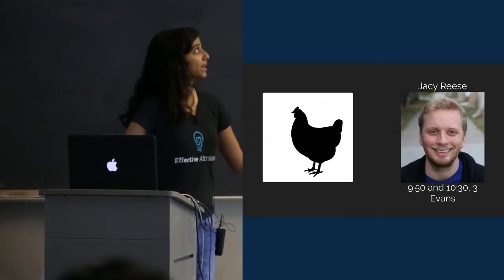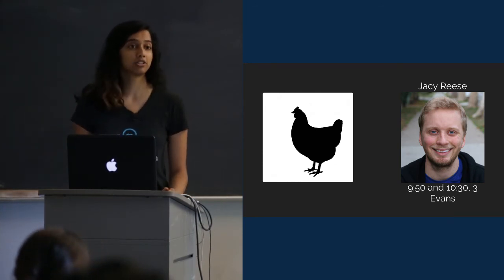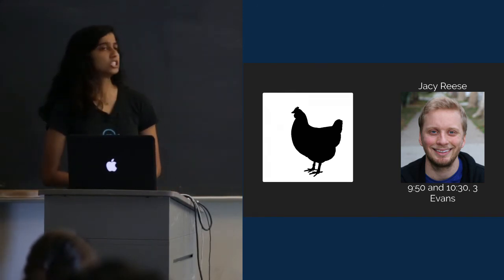So that's global poverty. Next we have farm animal welfare. J.C. Rees in the back is going to be talking to you about effective animal activism. He's going to do his talk twice, once right after this one, and once at probably like 10:40 or something in this room, 3 Evans. There are three times as many farm animals as there are humans in the world, and the vast majority of them are kept in industrial farming operations where they live very short, very painful lives. And it can actually be extremely cheap to help them. So J.C. will tell you more about that.